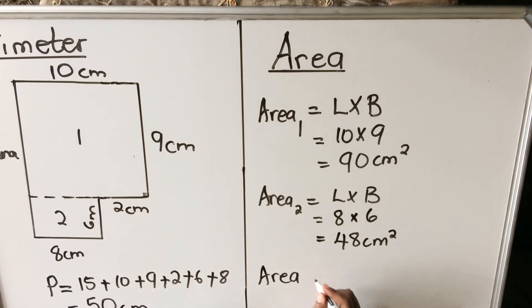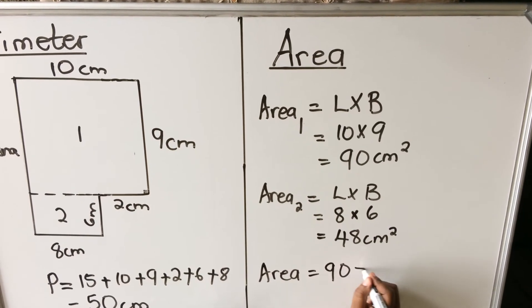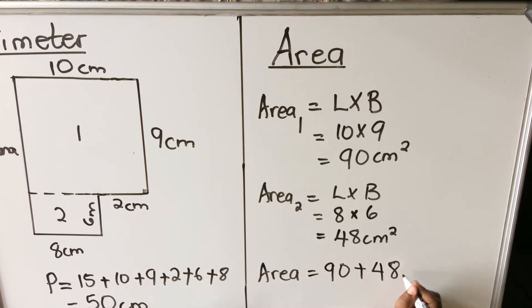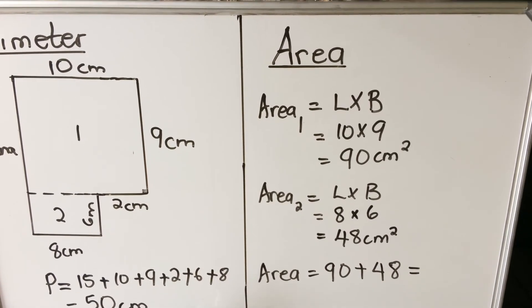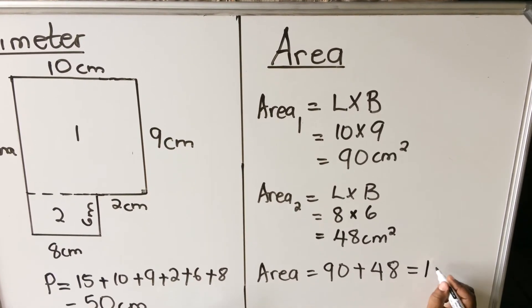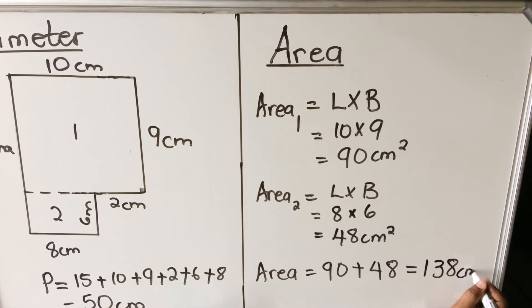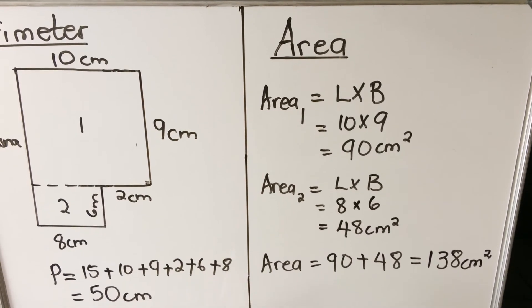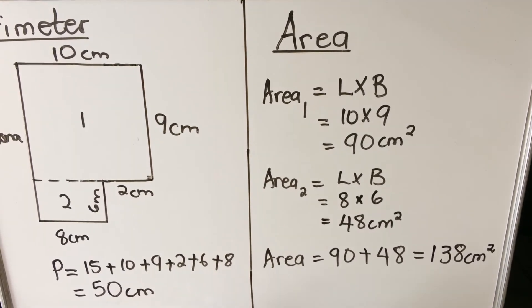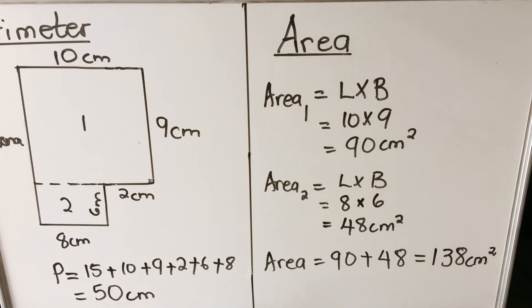So the total area, the area of the whole shape, is 90 plus 48, which is 138 centimeters squared. So when you calculate area of the irregular shape, you just cut it to two regular shapes and then add the areas.